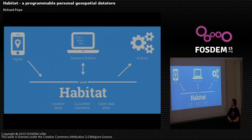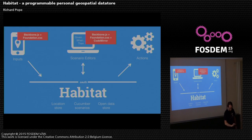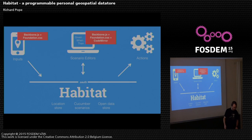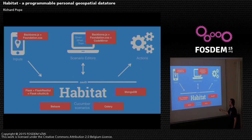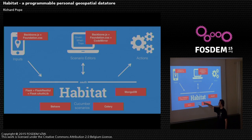In terms of what it's made of: the two example clients are built with Backbone.js and Foundation. The code editor uses CodeMirror, which is an in-browser code editing tool. The server itself is a grab bag of technologies — it's written in Flask with OAuthlib and Flask-RESTful for the API.